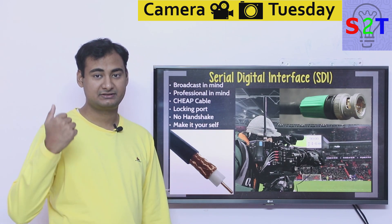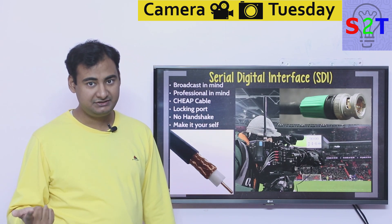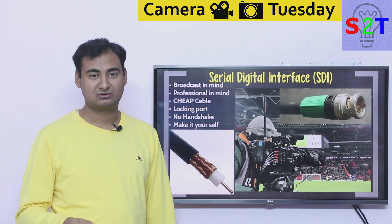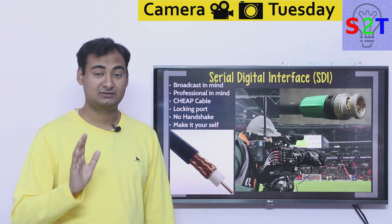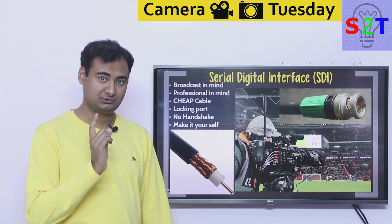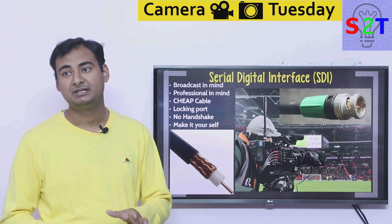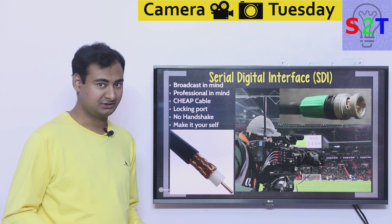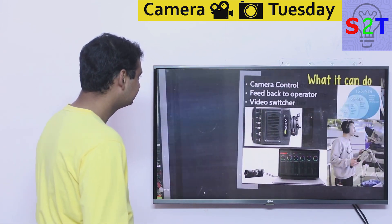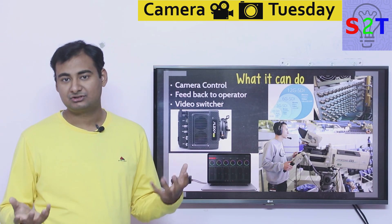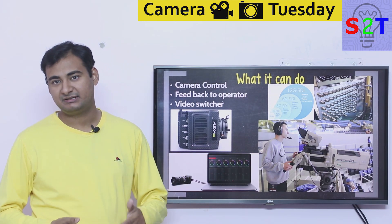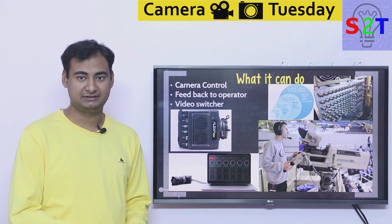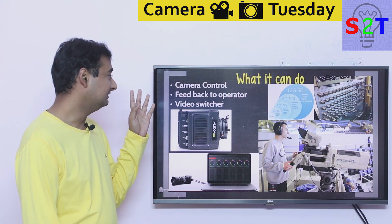SDI has a locking system, it is very cheap, it does not require a handshake — it just works. There is no encryption on this, so be aware that if somebody is transmitting video over SDI, do not expect any encryption. But then the question becomes: what can SDI do that HDMI simply cannot?